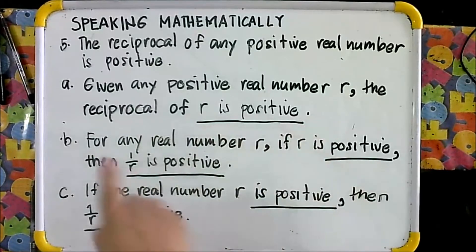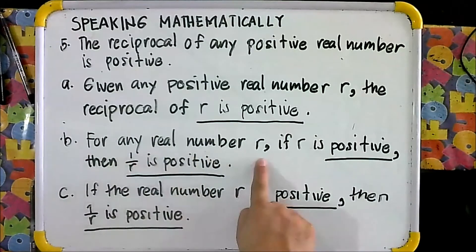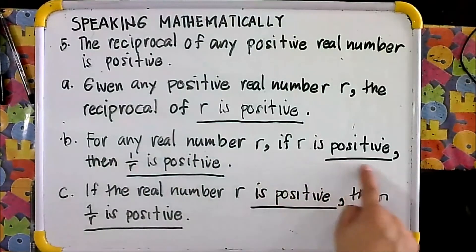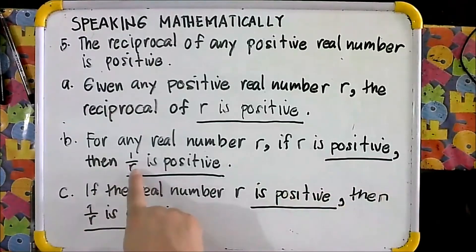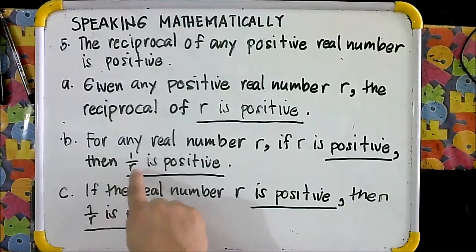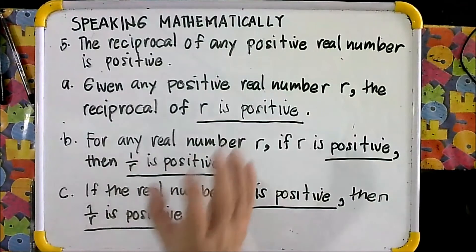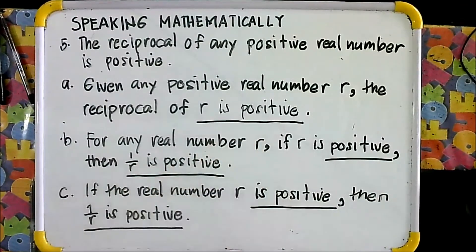For letter B: for any real number R, if R is positive, then 1 over R — that is, the reciprocal of R — is also positive.